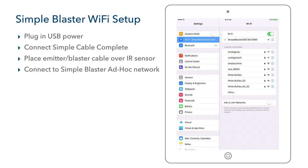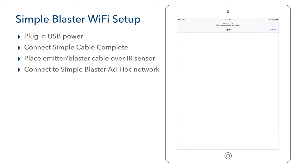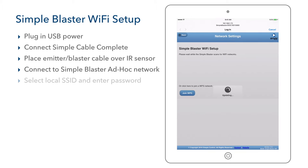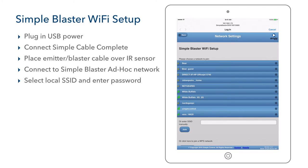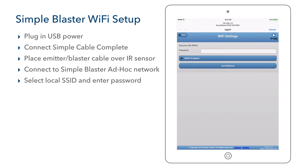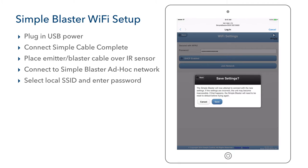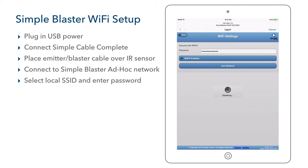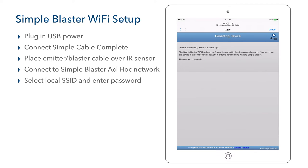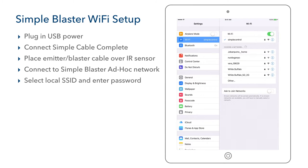On the webpage, the Simple Blaster will scan for local networks. We find and select our network name from the list — in this case, Simple Control. We enter our network password, select Join Network, and Save. We wait 40 seconds for the unit to reboot and then select Proceed. We are taken back to the iOS controller's Settings screen and reconnected to our local Wi-Fi network. The Simple Blaster is now ready to add and control our devices.